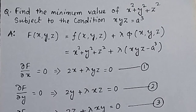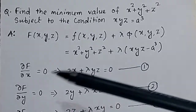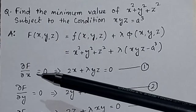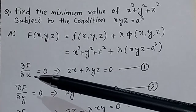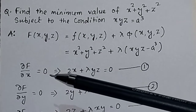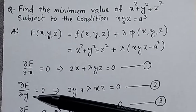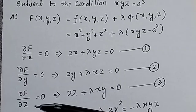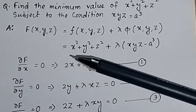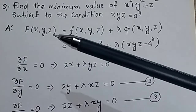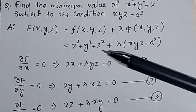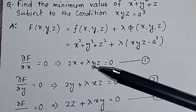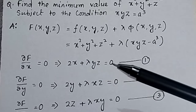To solve the Lagrangian equation, first we take the partial derivative of L with respect to x set equal to 0. Taking that partial derivative gives 2x + λyz = 0.